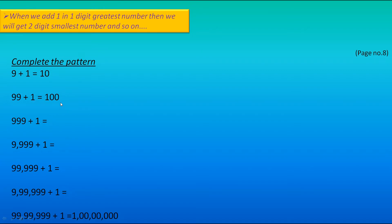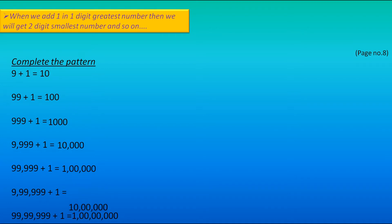So, when we add 1 to a 3-digit greatest number, we will get the 4-digit smallest number. Same way, here the 4-digit greatest number has 1 added to it, then we get the 5-digit smallest number. Same way, here we get the 6-digit smallest number, then the 7-digit smallest number, and so on.